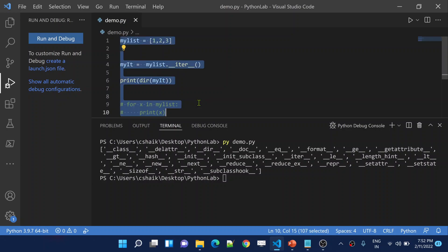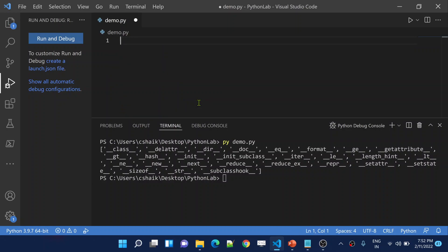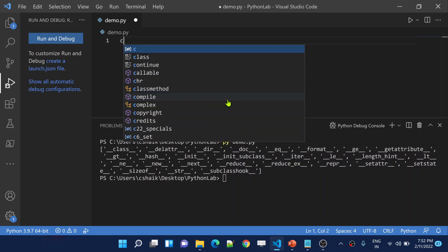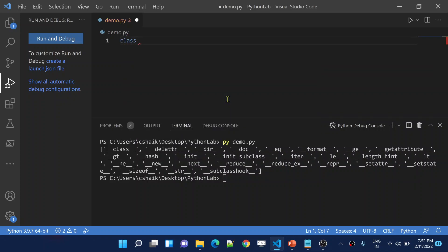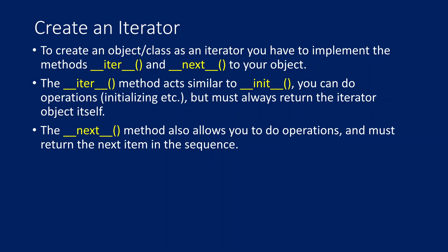We already discussed in past videos that whenever you create a class you use the __init__ function to assign values to properties. Similarly, if you want to create a class which is an iterator type — a class that acts as an iterator object — you must make sure to have an implementation for the __iter__ function and the __next__ function. The __iter__ function should always return the iterator object itself, and the __next__ function should do the operations and return the next value.